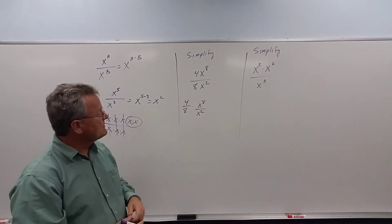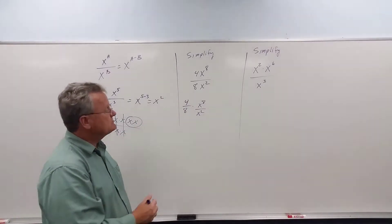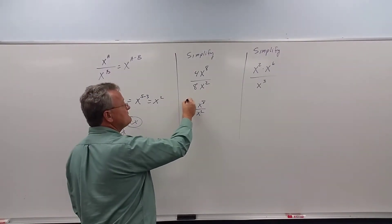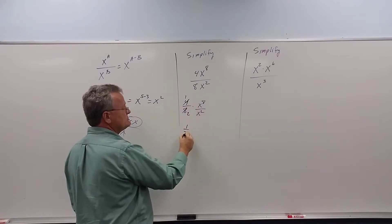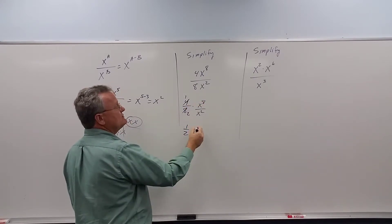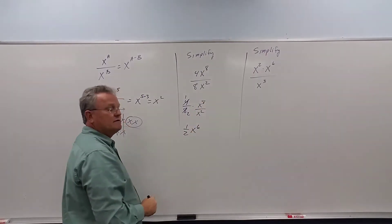Now we can simplify. 4 goes into 8 twice, or 4 goes into 4 once, 4 goes into 8 twice, so that reduces to a half. Here we subtract the exponents. 8 minus 2 gives us 6.